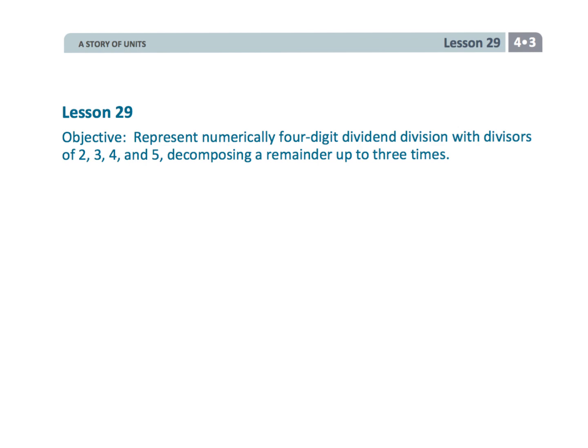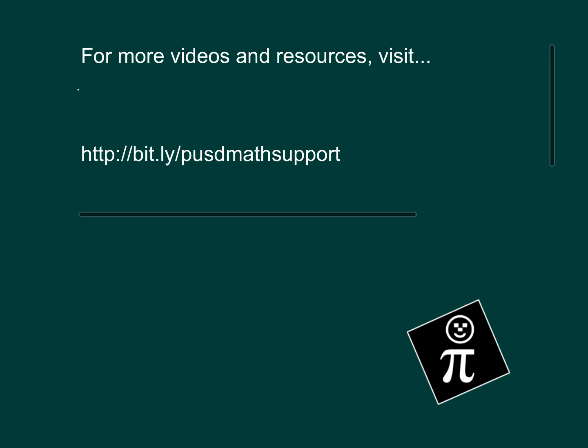And that wraps up 4th grade module 3 lesson 29. Continuing to practice that standard algorithm. Only this time we're dividing 4-digit dividends by a simple divisor like 2, 3, 4, or 5. Now let's go back to class.